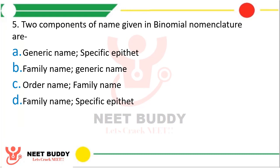Question 5. The two components of the name given in binomial nomenclature are: Option A, Generic name and specific epithet. The correct answer is Option A, Generic name and the specific epithet.